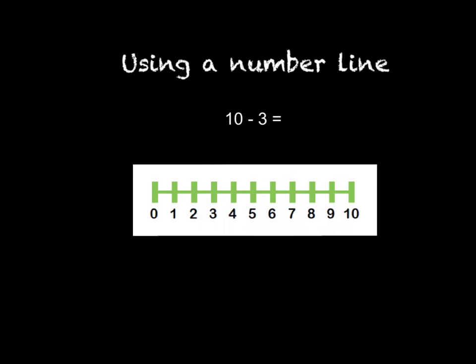When children are confident using objects to take away as well as their fingers, the next stage is to start using a number line. So look at the following number sentence: 10 take away 3. We start on the biggest number, 10, and then take away 3 — 1, 2, 3. What number have you landed on? 7. So 10 take away 3 equals 7.